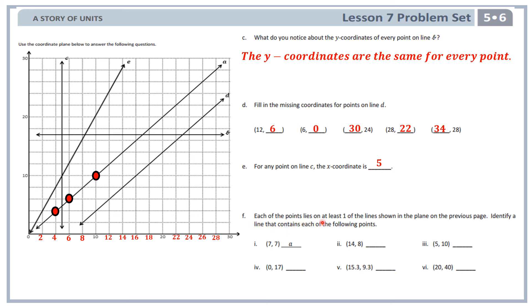F: each of the points lies in at least one of the lines shown in the plane. Identify a line that contains each of the following points. We've done the first one: 7 comma 7 is line A. The second one, 14 comma 8: here's 14 on the x-axis, move up until I'm at 8 on the y-axis — that is line D. The next one, 5 comma 10: here's 5 on the x-axis, go up vertically until I'm at 10 on the y-axis — and there's an intersection of two lines there, line C and line E. So that could be either or. Do the remaining 3.